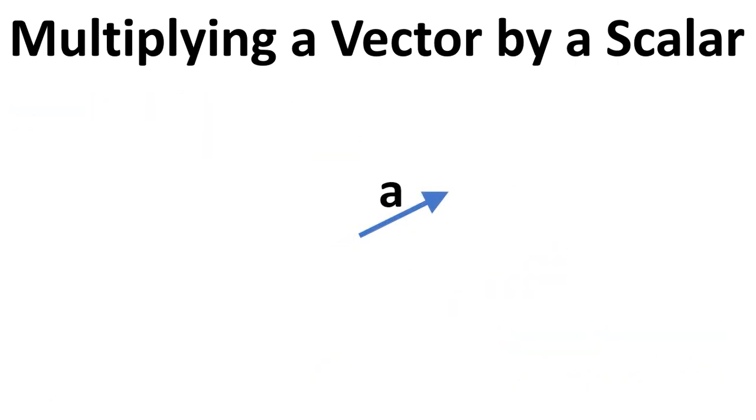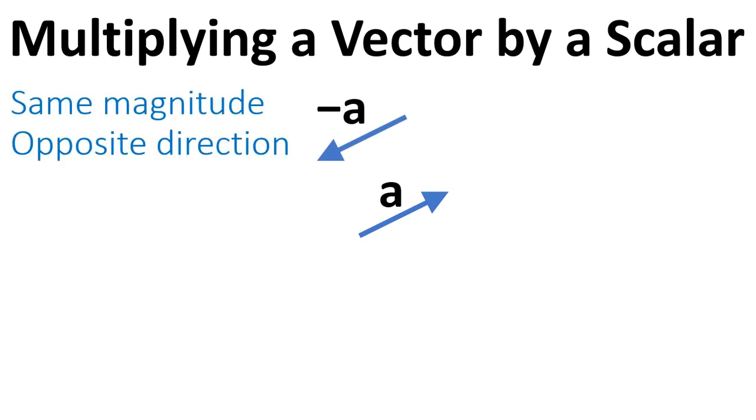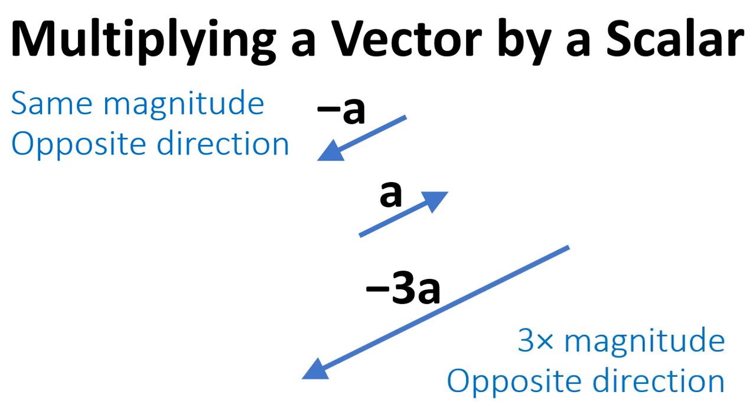If we multiply by negative numbers, if we multiply by minus 1, we get the same magnitude but the opposite direction. If we multiply by minus 3, we have 3 times the magnitude but the opposite direction. So multiplying by a negative number changes the direction of the vector.